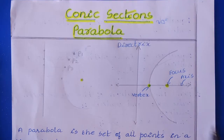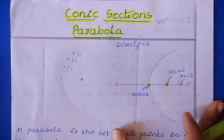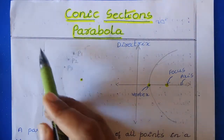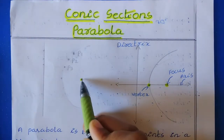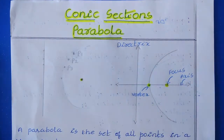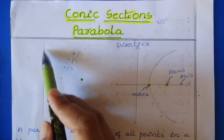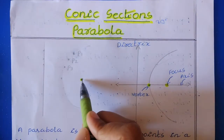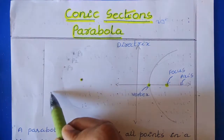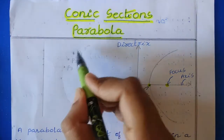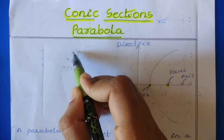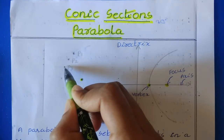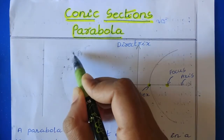To understand parabola, let us take a fixed point as well as a fixed line. This is the fixed point I have taken and this is the fixed line I have taken. From this fixed point and fixed line, we will consider some set of points — let us say P1, P2, P3, P4, like this way.